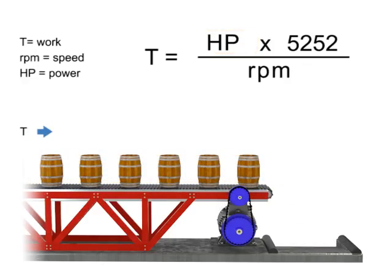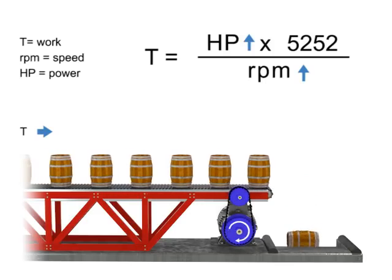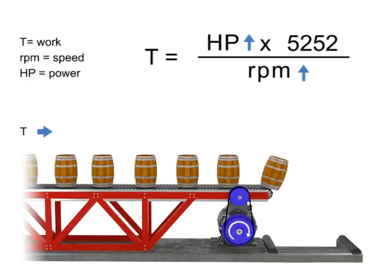Let's say we wish to keep torque constant but want to increase the production of barrels. If the torque or number of barrels on the conveyor belt remains constant but speed increases, then the horsepower of the motor also increases. In other words, a more powerful motor is required to produce the same amount of torque more quickly.